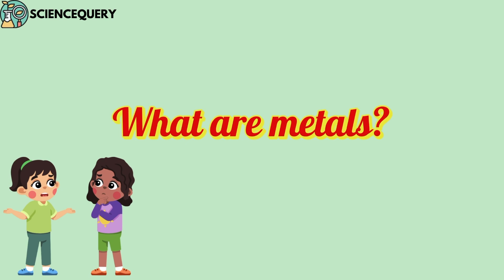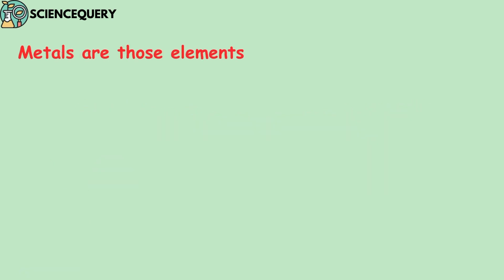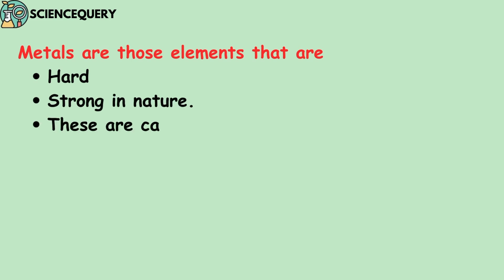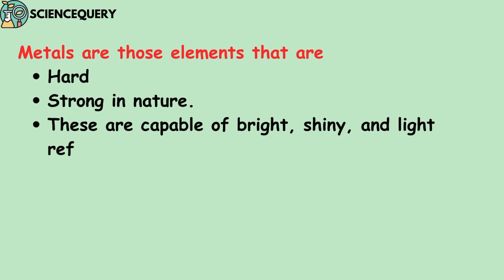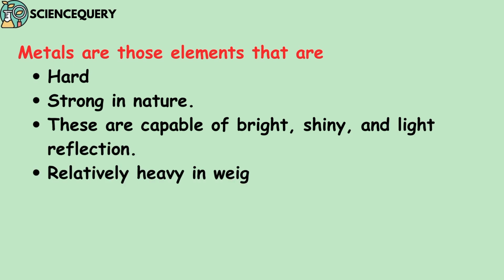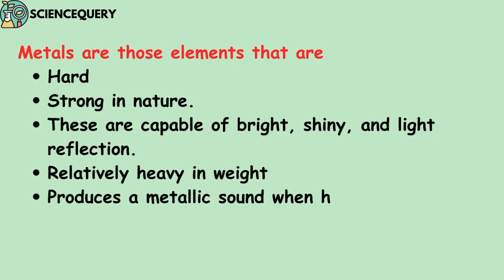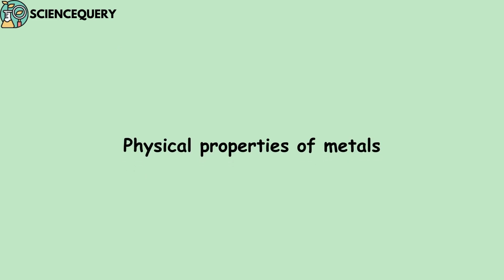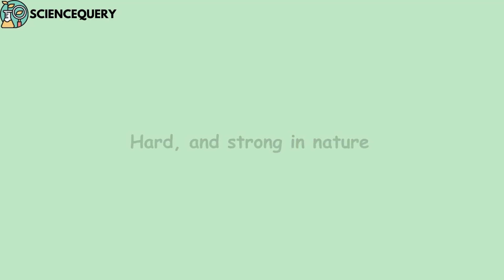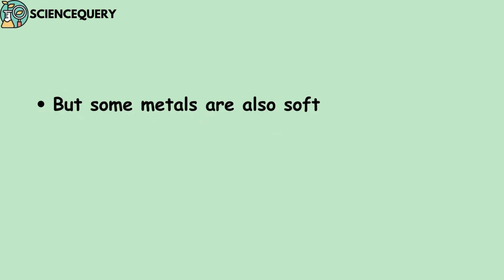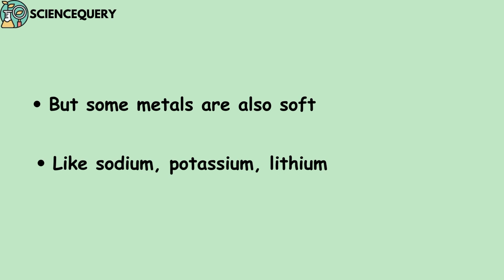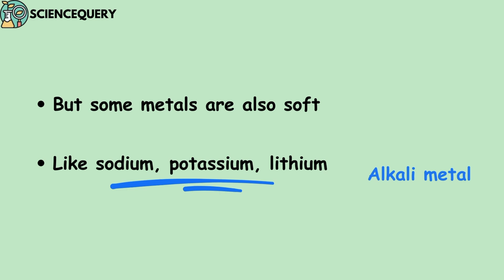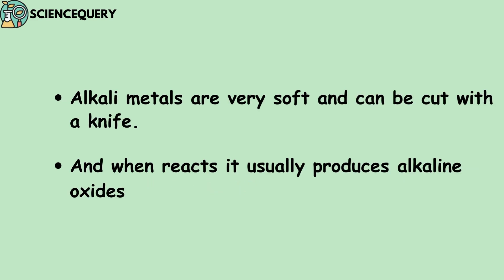Now let us see what are metals. Metals are those elements that are hard and strong in nature. These are capable of bright, shiny light reflection, are relatively heavy in weight, produce a metallic sound when hit, and produce alkaline oxides when they react. Metals are hard and strong in nature, but some metals are also soft like sodium, potassium, and lithium. These metals are known as alkali metals — they are very soft, can be cut with a knife, and usually produce alkaline oxide when they react.